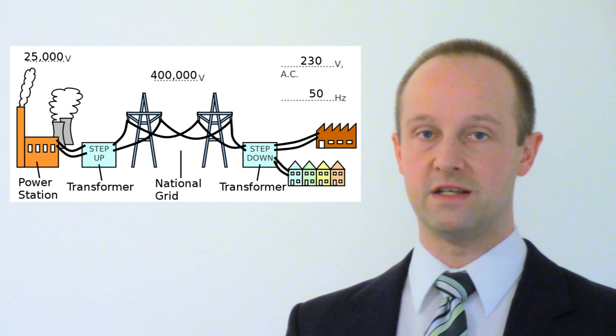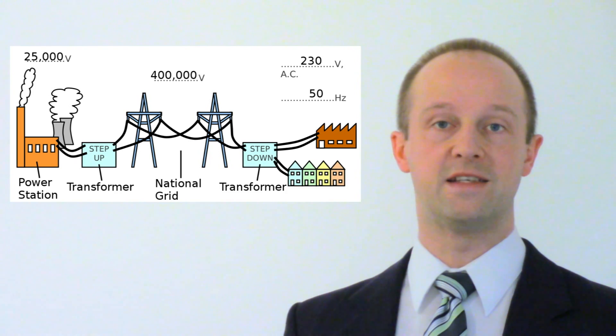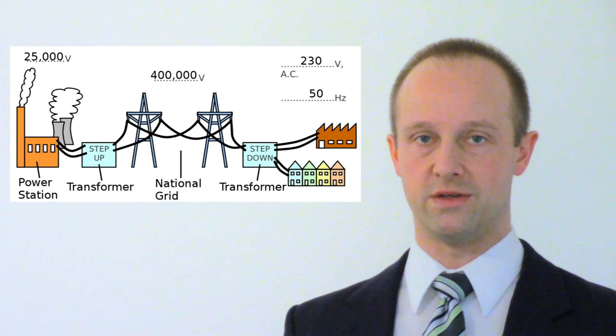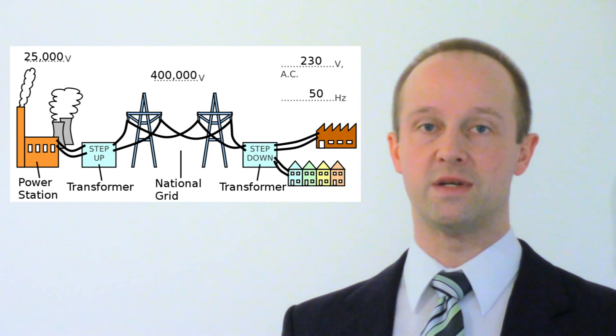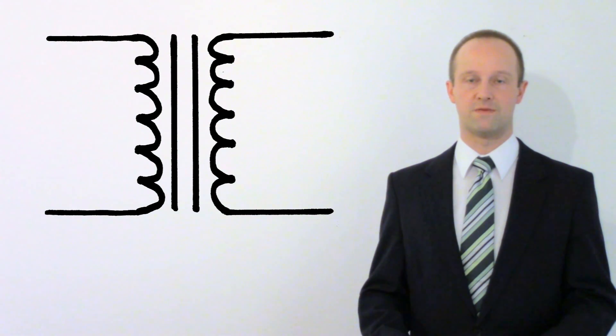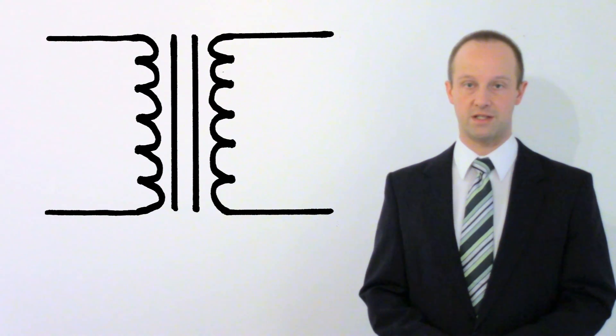At the other end though these very high potential differences are dangerous. They can arc very easily through the air you wouldn't want to use them in your home and so the potential difference has to be stepped back down again. We use a step down transformer to reduce the potential difference to safer levels.